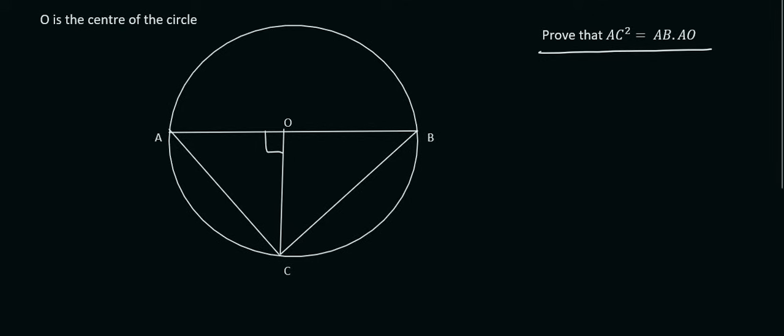Next step is to decide which triangles we need to work in. Well, AC squared, this part here, should tell us that it's two different triangles that both have AC. So obviously, then, it's going to be this triangle, as well as this triangle. So now our goal is to prove that those two triangles are similar.